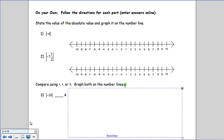For the on your own problems, numbers 1 and 2 are just like the examples. Graph the number to find its distance from 0, and that's the absolute value of the number.